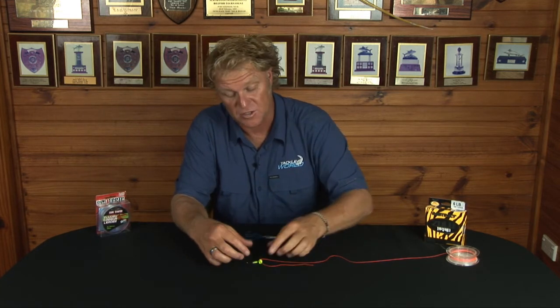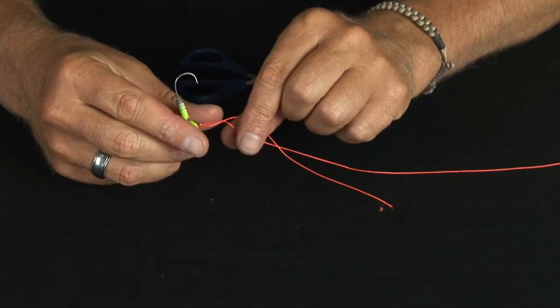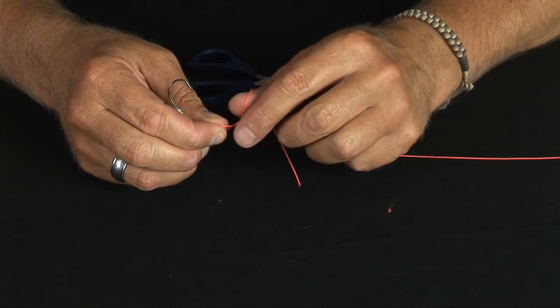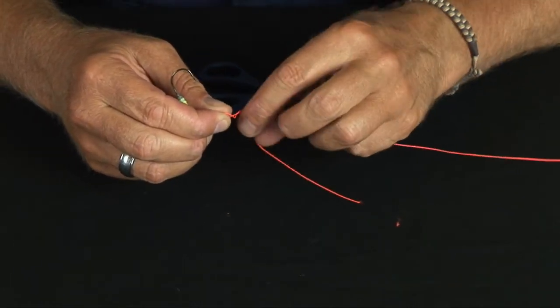Go through the eyelet of your swivel, jig head, or lure. Pinch it between your thumb and forefinger to create a loop, and wrap your tag end around as many times as you like—lighter lines a few more times than heavier lines.